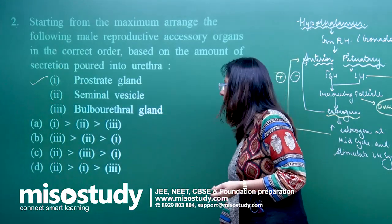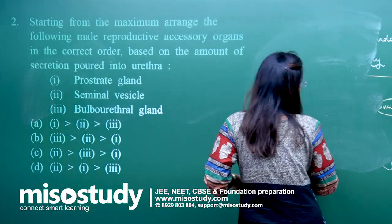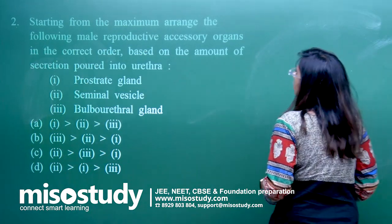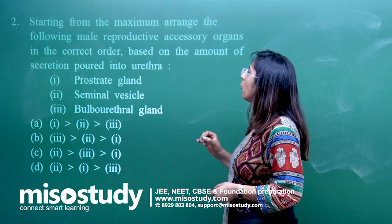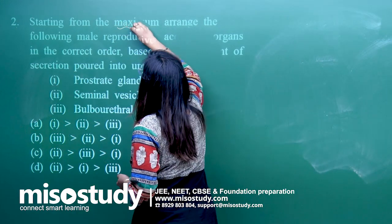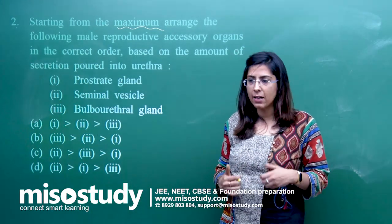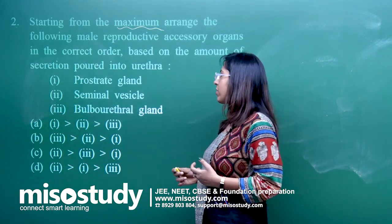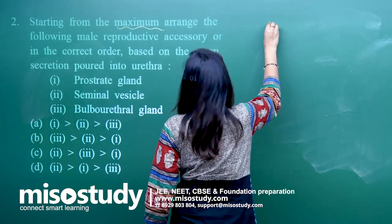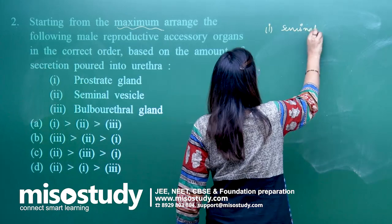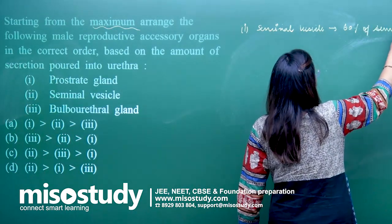Let's look at the second question. Arrange the following male reproductive accessory organs in the correct order based on the amount of secretion poured into the urethra, starting from the maximum. The different structures given are prostate, seminal vesicle, and bulbourethral gland. First I would like to discuss the seminal vesicle because its secretion is very high — 60% of the semen is the secretion of the seminal vesicle.